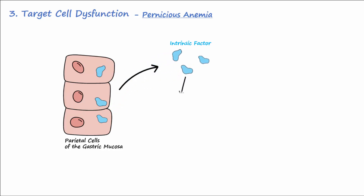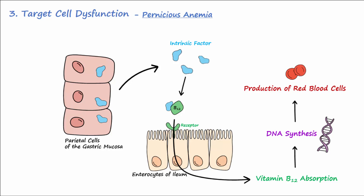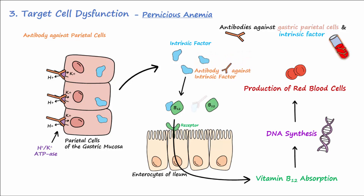Another clinically relevant example of antibodies causing target cell dysfunction is pernicious anemia. Intrinsic factor produced by parietal cells is required for vitamin B12 absorption in the ileum. Vitamin B12 is necessary for DNA synthesis and therefore production of red blood cells. Antibodies against gastric parietal cells and intrinsic factor can both be detected in the blood of patients with pernicious anemia. Antiparietal cell antibodies target the hydrogen-potassium pumps on parietal cells. The intrinsic factor antibodies block intrinsic factor from binding to vitamin B12.